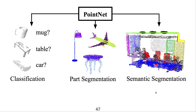Here are these applications. First, classification: a point cloud comes in and a label is predicted. For part segmentation, a single object point cloud is presented as input, and then this single point cloud describing one object is broken down into individual parts, and each point has a part label.